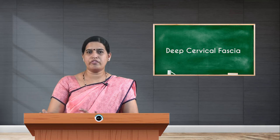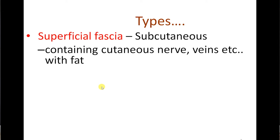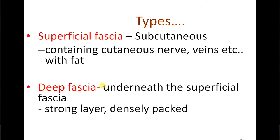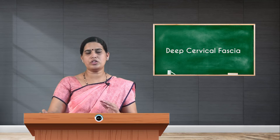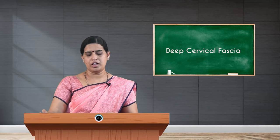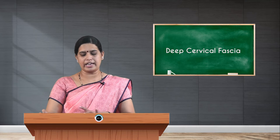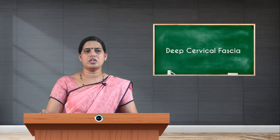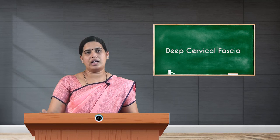There are two types of fascia. After you reflect the skin, you will find superficial fascia and deep fascia. In the superficial fascia, also called the subcutaneous layer, you find fat, cutaneous nerves, and vessels. Once you remove the superficial fascia, you find the deep fascia, which is strong and dense with connective tissue, tightly packing the underlying structures.